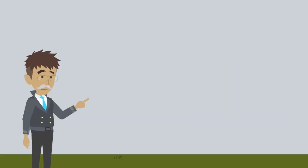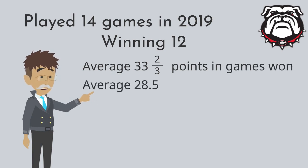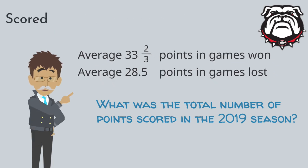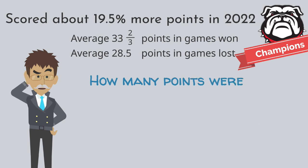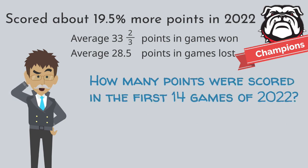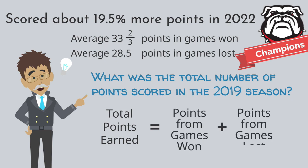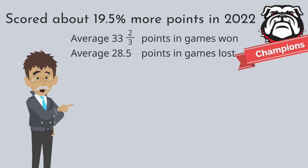The Georgia Bulldogs football team played 14 games in the 2019 season, winning 12 and losing the rest. If they scored an average of 33 and two-thirds points in the games they won, and an average of 28 and five-tenths points in the games they lost, what was their total number of points scored that season? They scored 19 and a half percent more points in their first 14 games of the 2022 season and were the national champions. How many points did the Georgia Bulldogs score in the first 14 games of the 2022 season? Let's write an equation to break this problem down. The total points earned in the 2019 season is the sum of the points from the games they won and lost. We can calculate the points from games won by multiplying the number of games by the average number of points.